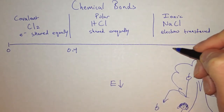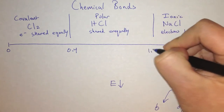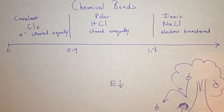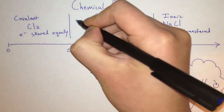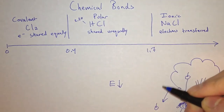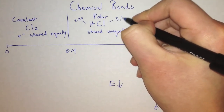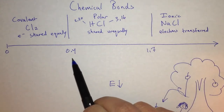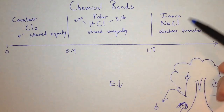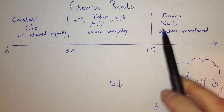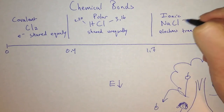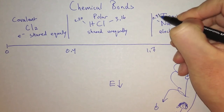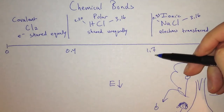A polar covalent compound is between 0.4 and 1.7. For example, hydrogen's electronegativity is 2.20 and chlorine's electronegativity is 3.16, so the difference is about 1, which is between 0.4 and 1.7. In an ionic bond, it's a difference greater than 1.7. In our case, chlorine is 3.16 and sodium is 0.93, which is a difference definitely greater than 1.7.